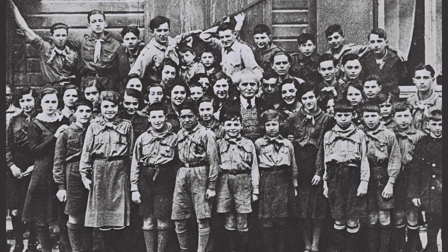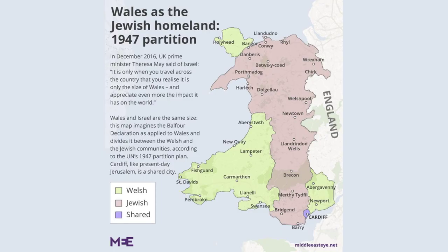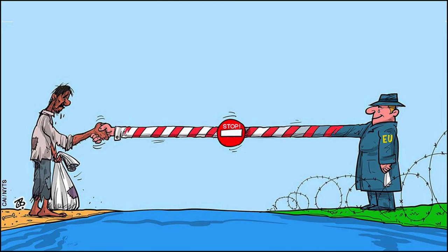To understand the roots of the Arab-Israeli conflict, we must go back to the late 19th century, when the Zionist movement emerged. Zionism aimed to establish a Jewish homeland in Palestine, which was then under Ottoman rule. The influx of Jewish immigrants into Palestine led to tensions with the Arab population, who feared being displaced in their own land.